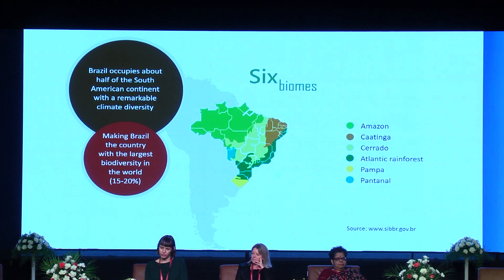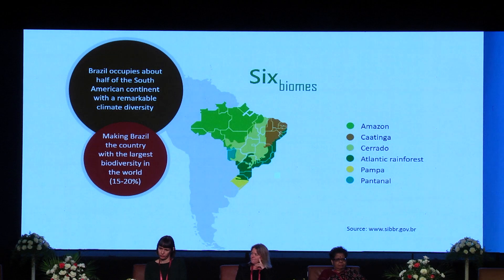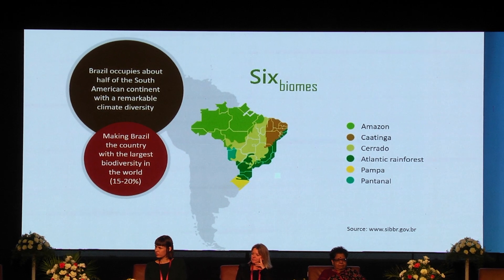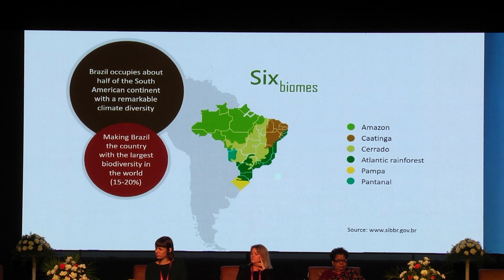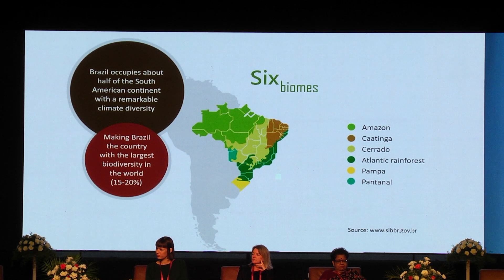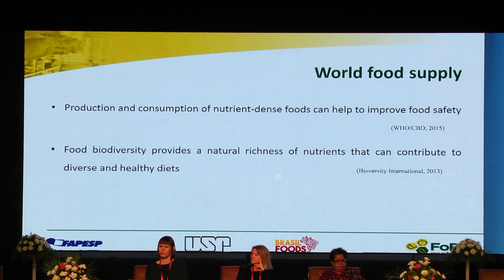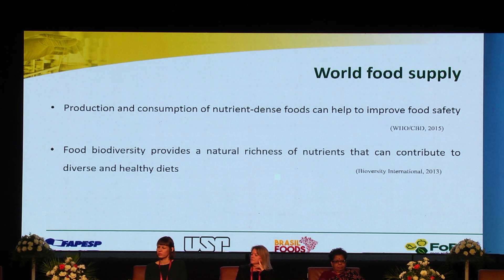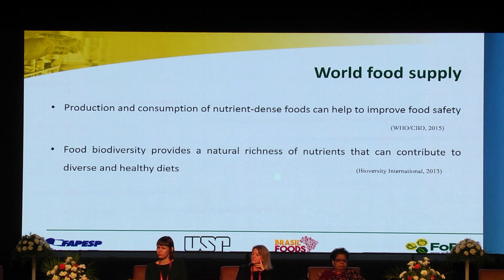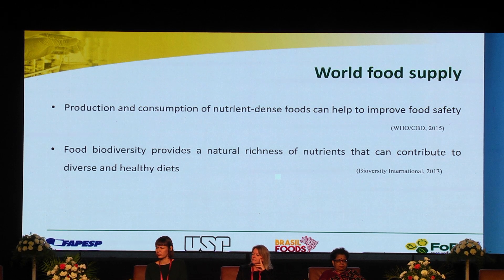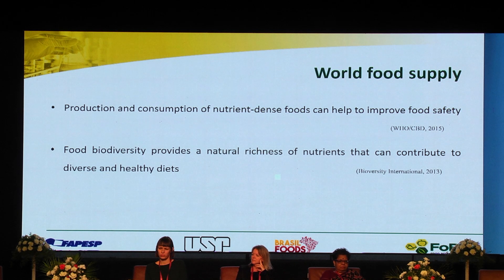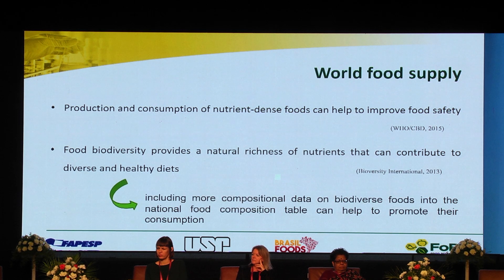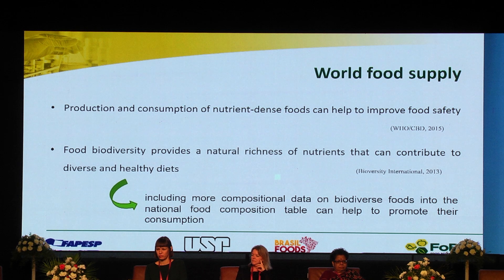When we look at Brazil, we can see that it occupies about half of the South American continent with remarkable climate diversity, which makes Brazil a country with six different biomes and the largest biodiversity in the world. The production and consumption of nutrient-dense foods can help improve food security, and food biodiversity provides a natural richness of nutrients that can contribute to diverse and healthy diets. Including more compositional data on biodiverse foods into the national food composition table can help promote their consumption.